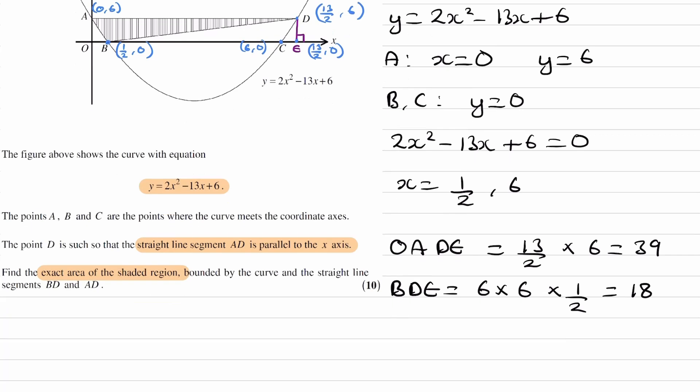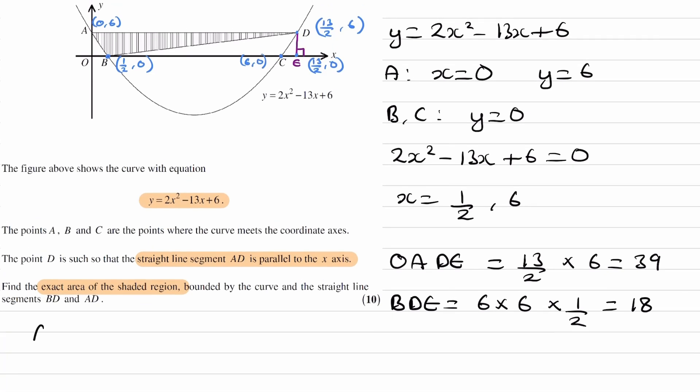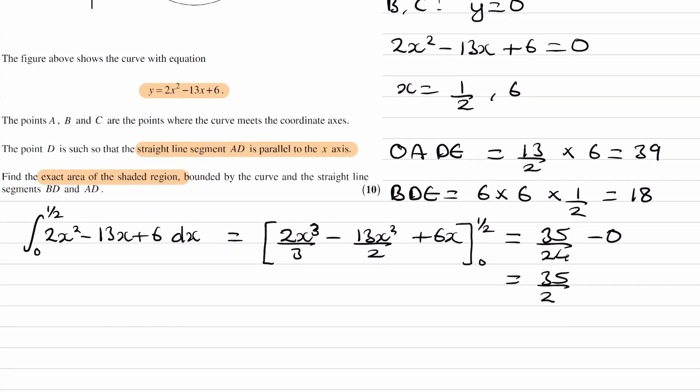So we can integrate the curve. The curve is 2x squared minus 13x plus 6. The limits for this integral would be the x-coordinates for this point and this point. So they would be 0 and a half. So integrate this, raise the power by 1, divide by the new power, and then we'll put in our limits of 0 and a half. This gives us 35 over 24 minus 0, which is just 35 over 24.